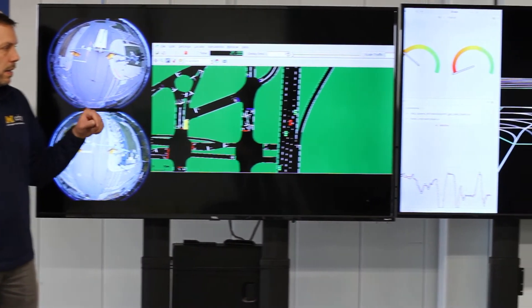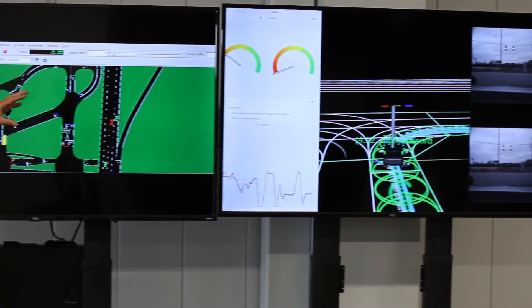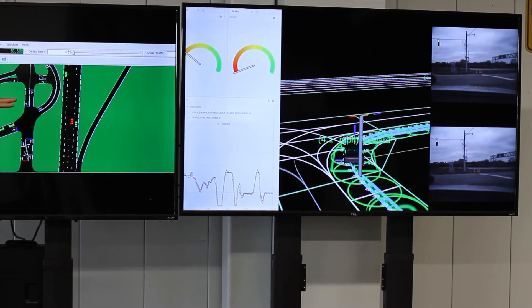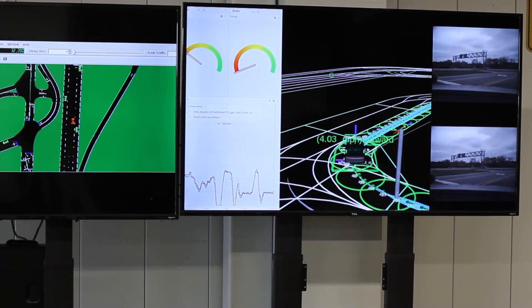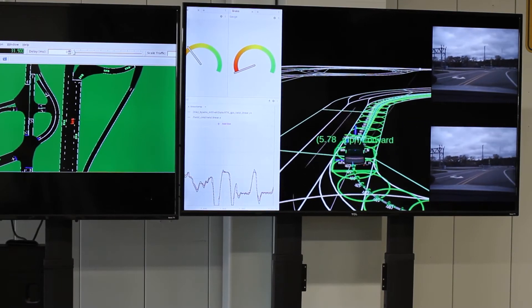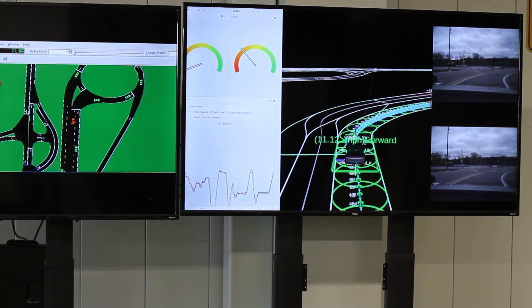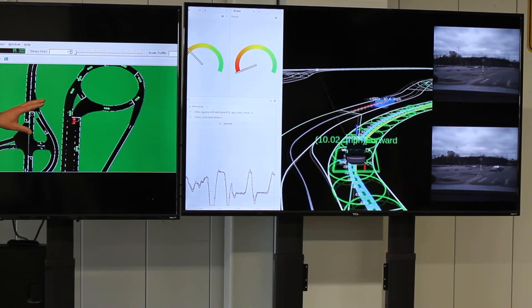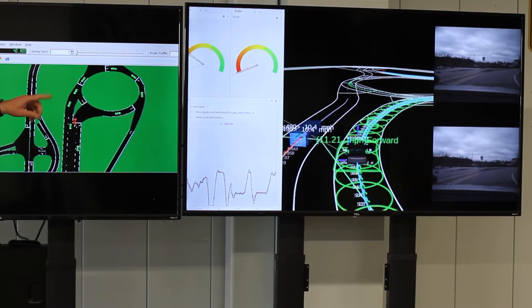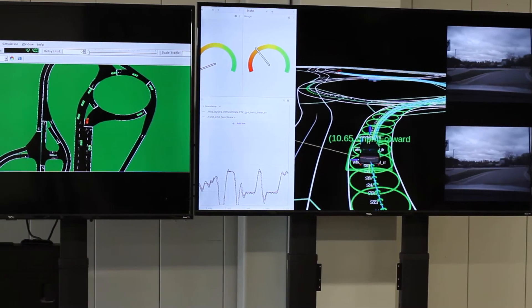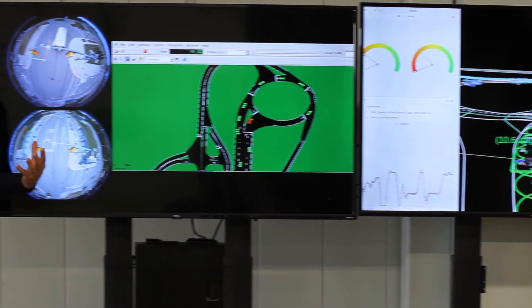And then finally on the right-hand side is my vehicle's algorithms. I can see in real time whether I'm here in Ann Arbor or down in Texas, California, wherever, how my algorithms are performing based on the statistics and information that mCity is sending me in real time through mCityOS.